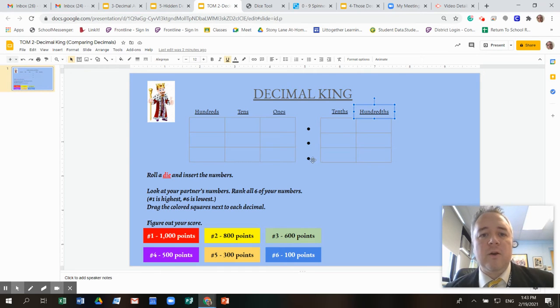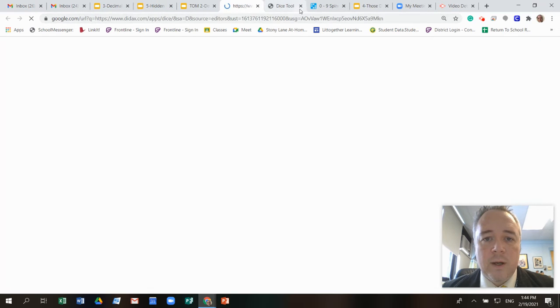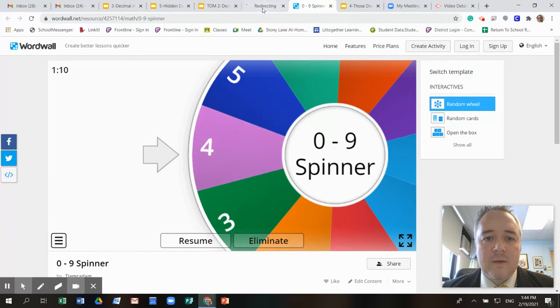In this game today, you're going to have a partner that you're going to play with and you are going to use a die. Remember how I told you, if you don't have a real die, you can use the electronic die. And if you need that, the link is right here. You would just click on that and open up this website.